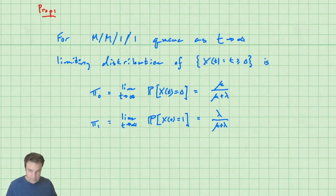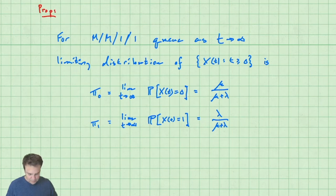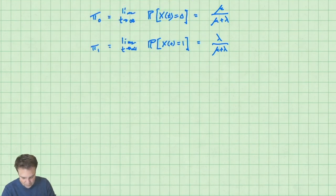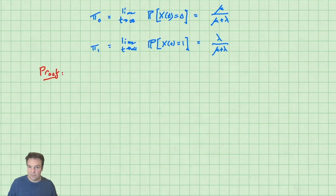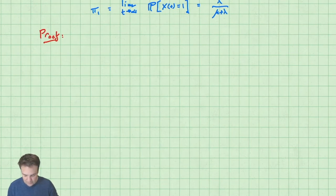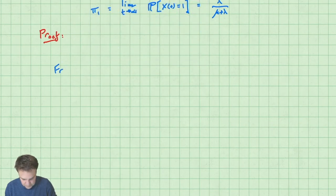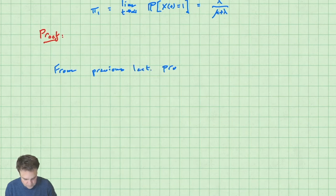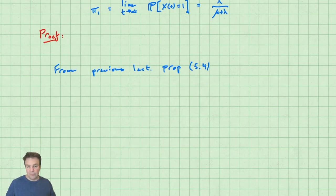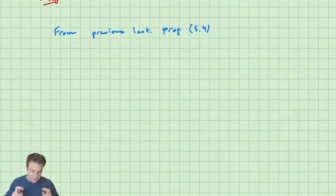We want to find the equilibrium (limiting) distribution: the long-run probabilities of being in each state as t→∞. The proposition states: π₀ = μ/(μ+λ) and π₁ = λ/(μ+λ). Let's prove this by applying the birth-and-death process propositions from the previous lecture.